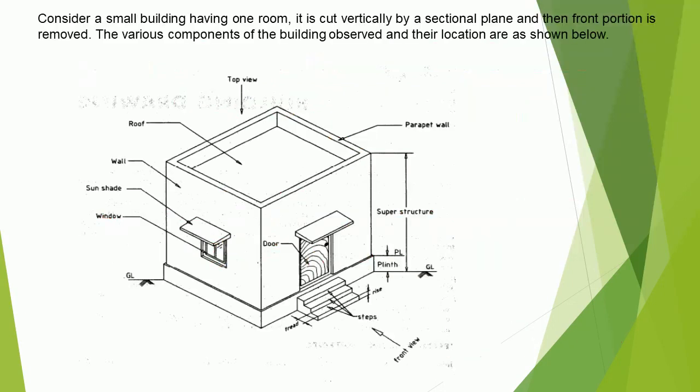Consider a small building having one room. It is cut vertically by a sectional plane and then the front portion is removed. The various components of the building observed and their location are as shown below.